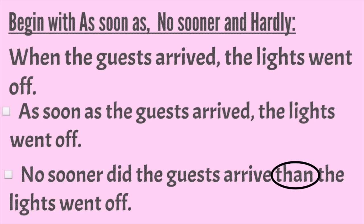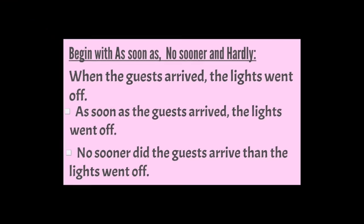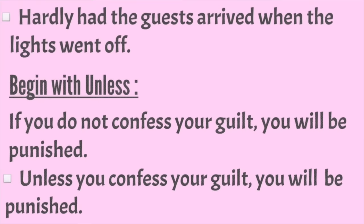When you begin with 'no sooner', instead of a comma you need to place 'than'. As the tense is past, place 'did' after 'no sooner' and the verb in base form — 'arrive' — after the subject. For 'hardly': 'Hardly had the guests arrived when the lights went off.' Place 'had' after 'hardly', use V3 form 'arrived' after the subject, and use 'when' instead of 'than'.